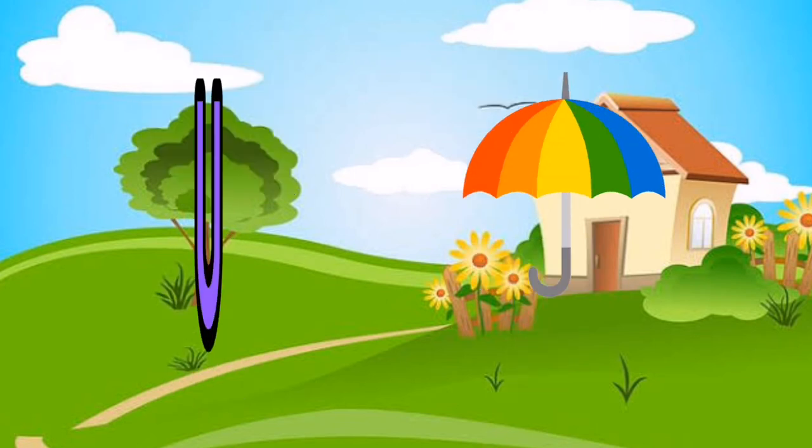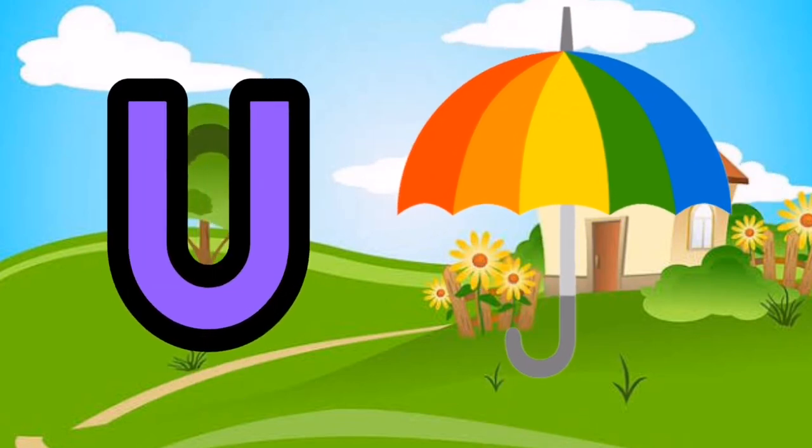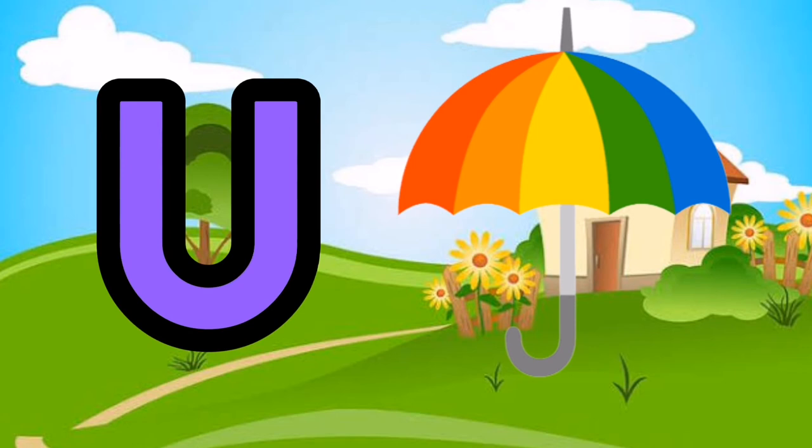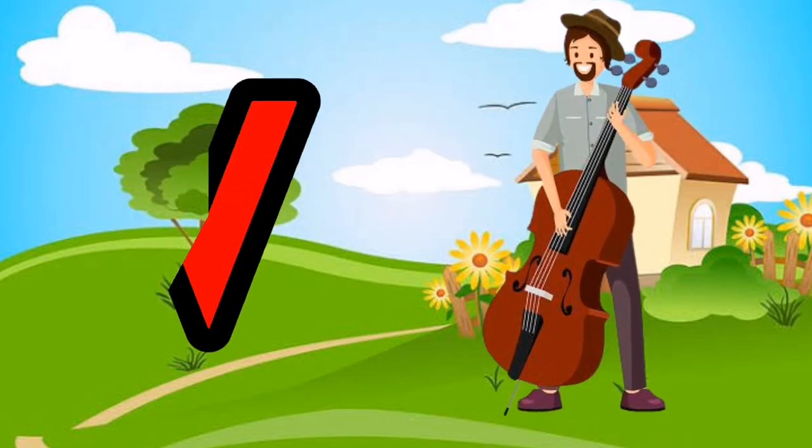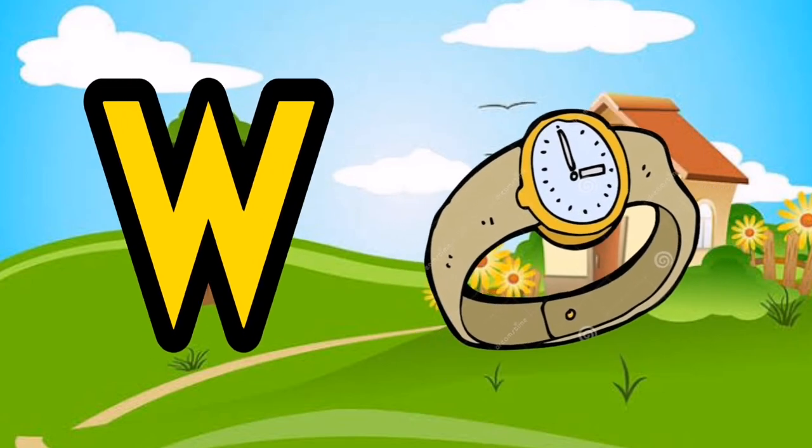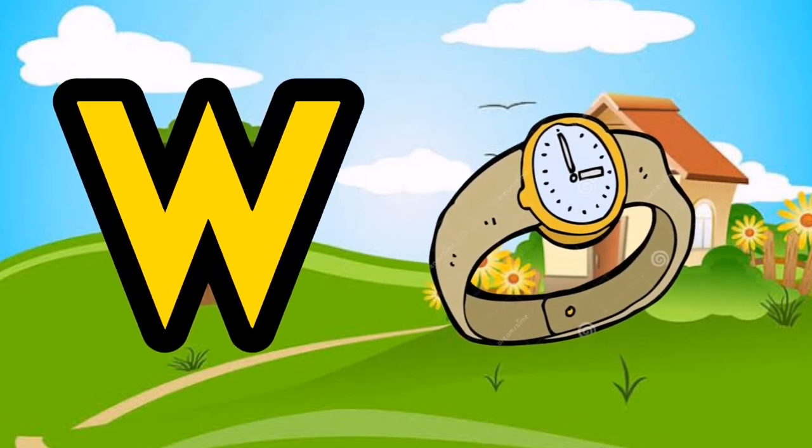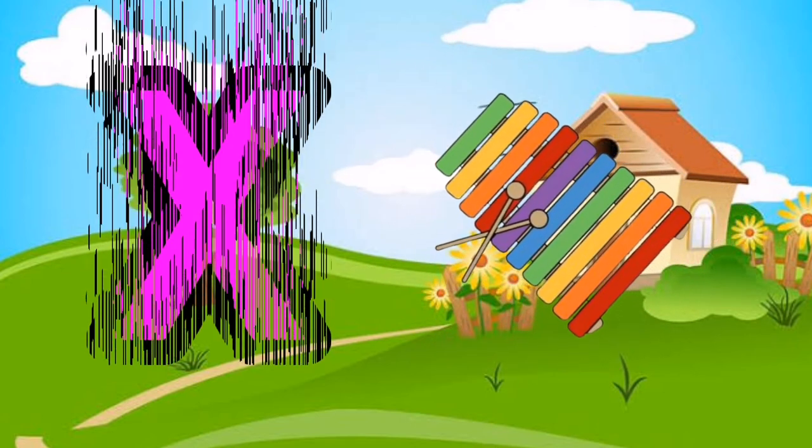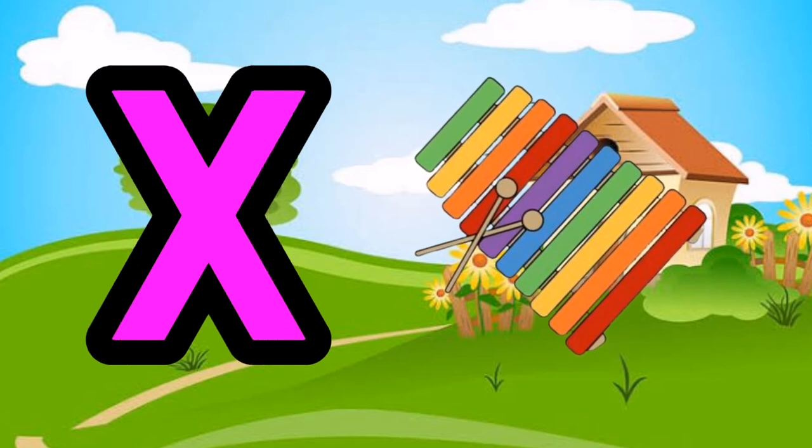U is for Umbrella, U-U-Umbrella. V is for Violin, V-V-Violin. W is for Watch, W-W-Watch. X is for Xylophone, X-X-Xylophone.